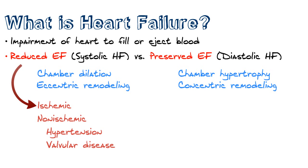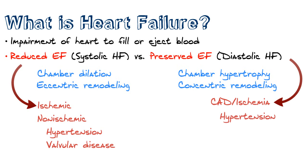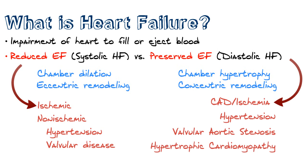The causes of diastolic heart failure or preserved ejection fraction heart failure are similar to systolic heart failure. They include coronary artery disease and ischemia, hypertension, and valvular disorders such as aortic stenosis. Other things can cause diastolic heart failure as well, like hypertrophic cardiomyopathy, so keep that in mind when differentiating between these two types of heart failure.